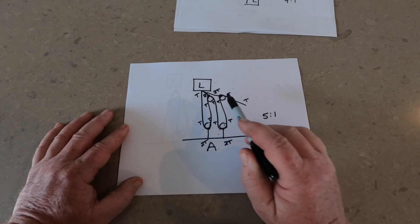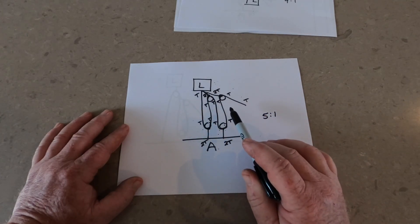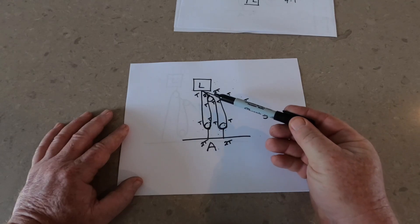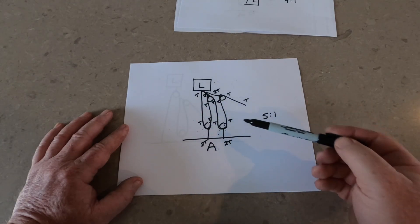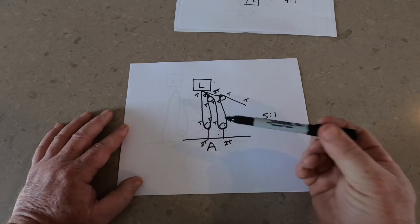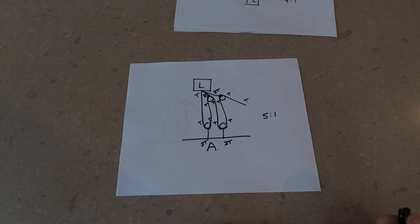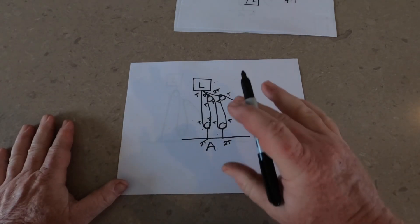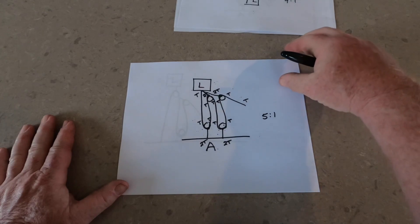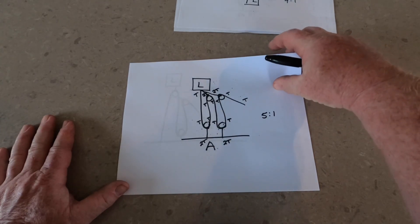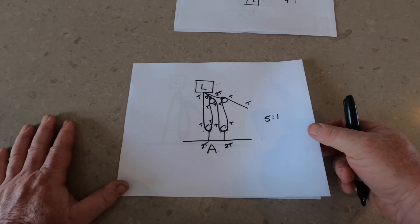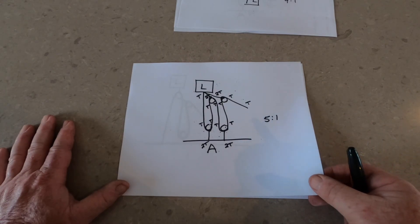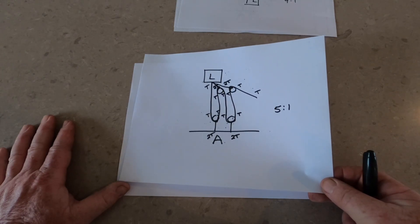Hopefully this is all making sense. My diagram might not make sense to you right away, but play with it and practice on your own — it'll make sense after a while. That's a 5-to-1. We're done with simple pulley systems; now we're going to move on to compound pulley systems.